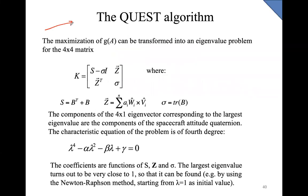The approach proposed by the QUEST algorithm is that we can use the characteristic equation of the problem to determine directly the quaternion. In the QUEST algorithm, the matrix K from the cost function G(A) is expressed as a function of three different operators: S equals B-transpose plus B; sigma is the trace of B; and Z is a vector given by the sum of the cross products of W and V. The components of the four-by-one eigenvector corresponding to the largest eigenvalue correspond to the quaternion.